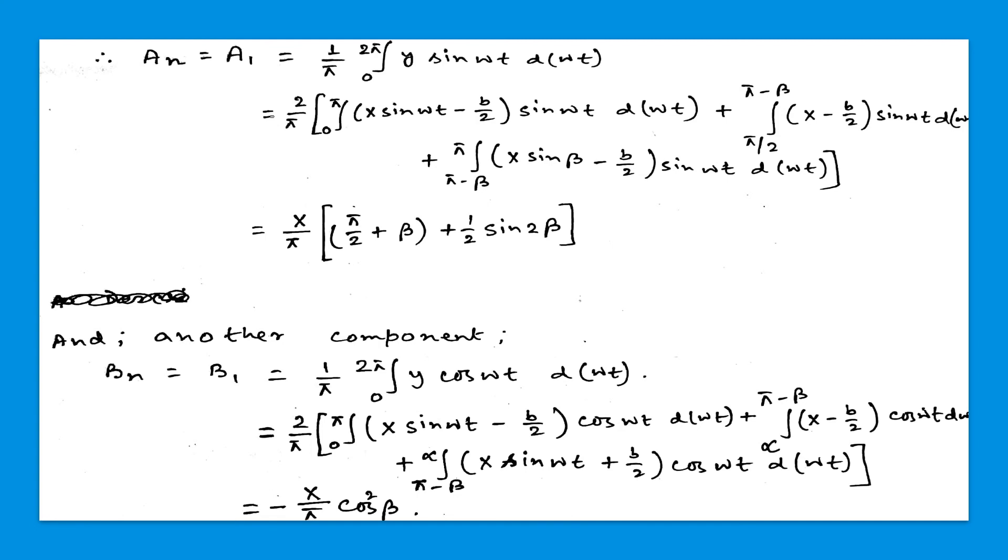And another component will be Bn, that is the first component B1 equals 1/π times the integral from 0 to 2π of Y cos(ωt) dωt. That equals the integral from 0 to π of (X sin(ωt) minus B/2) cos(ωt) dωt, plus for the limiting value of π to 2π minus β, (X sin(ωt) minus B/2) cos(ωt) dωt.